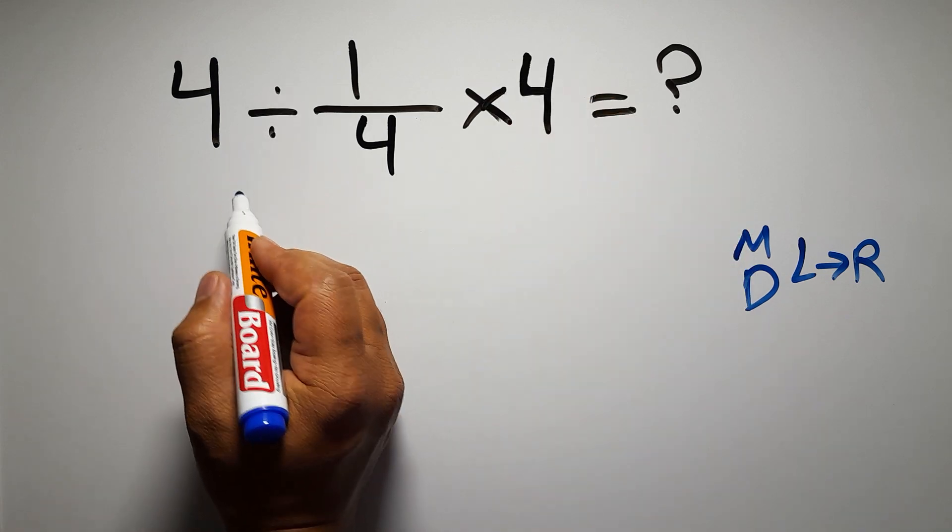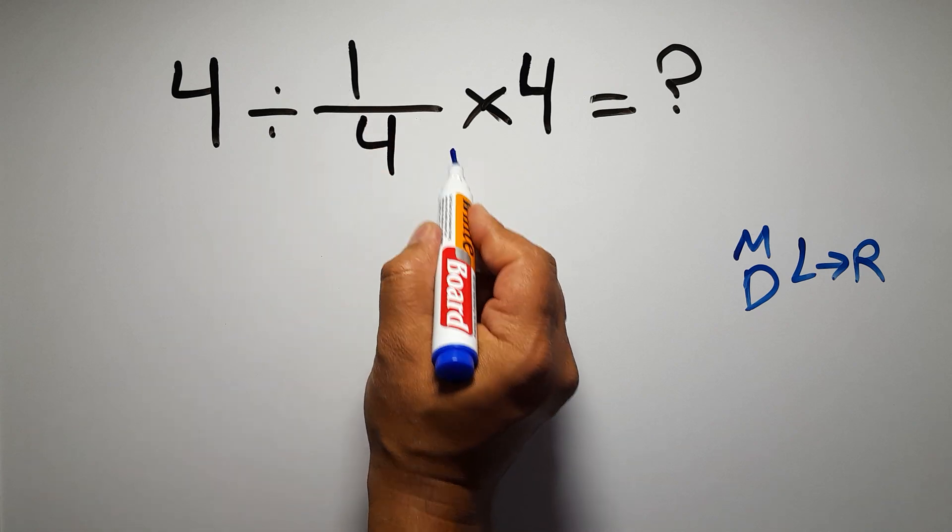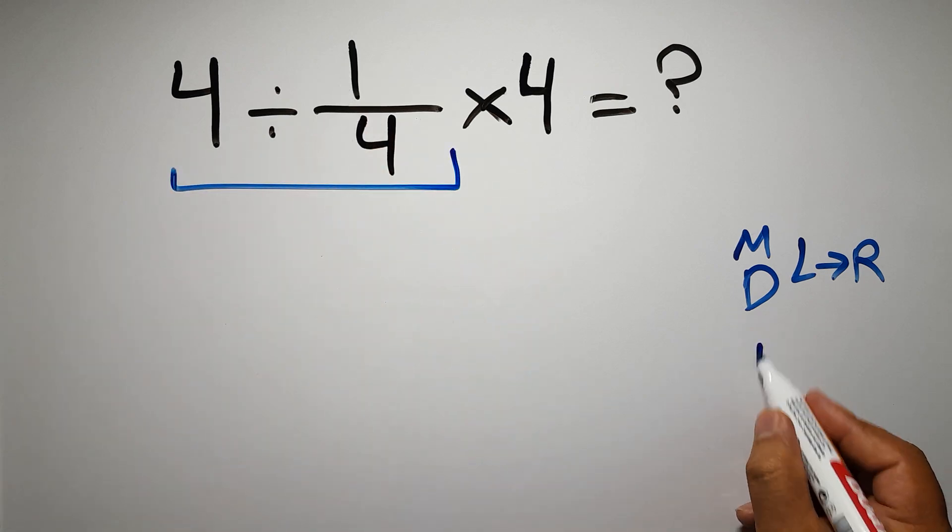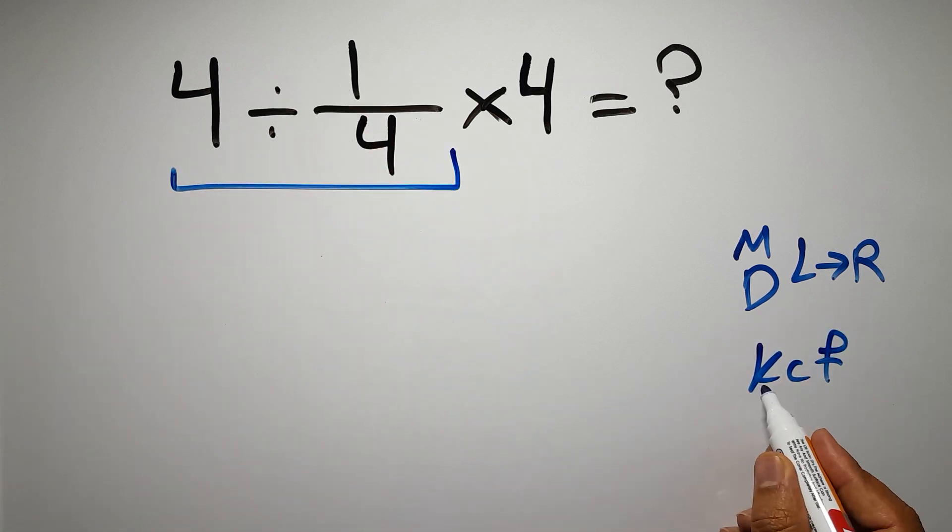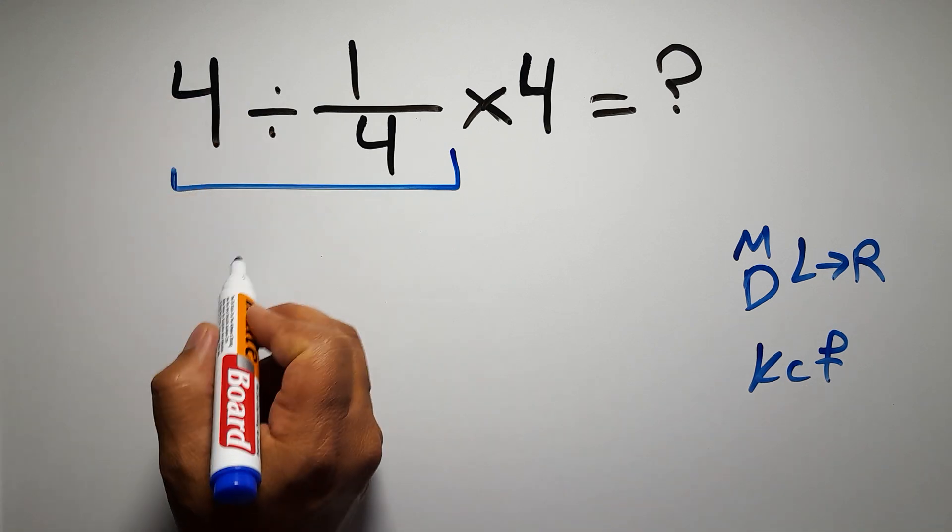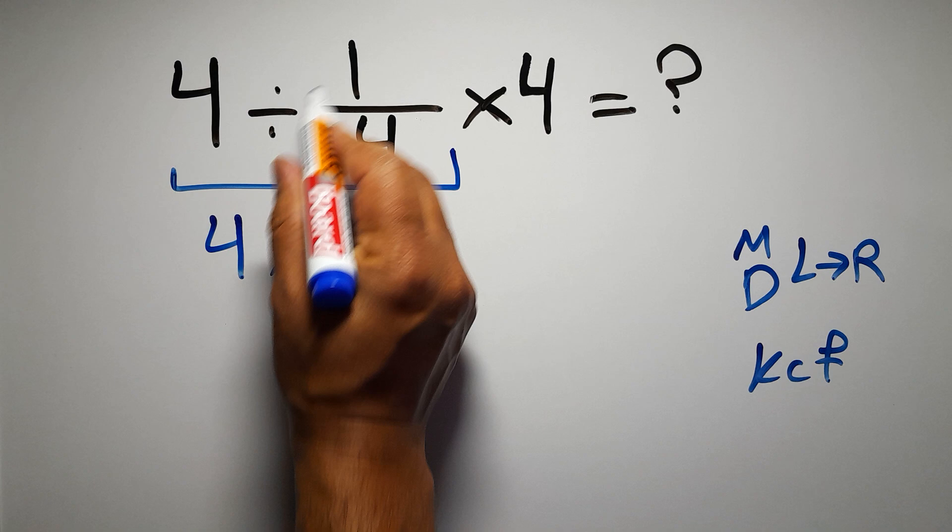So first this division: four divided by one over four. According to the KCF rule, K stands for keep, C stands for change, and F stands for flip. We can write: keep the first fraction, change division to multiplication, and flip the second fraction.